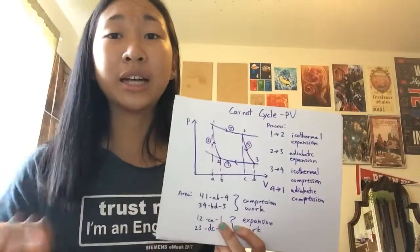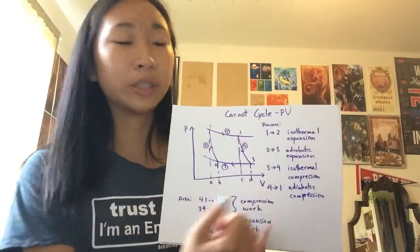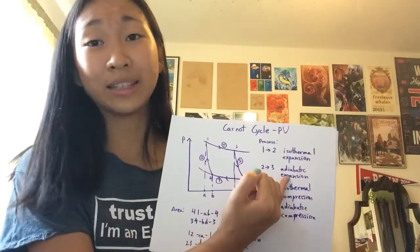The second process would be an isentropic process that's a steeper curved line that's also increasing in volume. Therefore, adiabatic expansion.